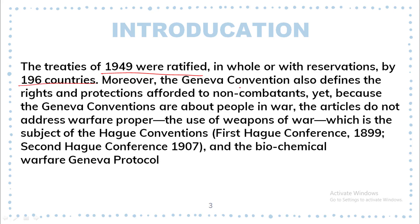Moreover, the Geneva Convention also defines the rights and protections afforded to non-combatants. Yet, because the Geneva Conventions are about the people in the war, the articles do not address warfare proper — the use of weapons of war — which is the subject of the Hague Conventions: the 1st Hague Conference held in 1899, the 2nd Hague Conference held in 1907, and the Biochemical Warfare Geneva Protocol.